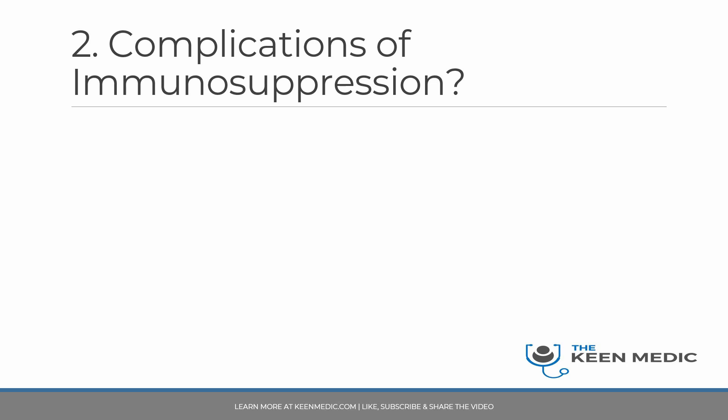Now let's look at complications of immunosuppression. Immunosuppression does wonders for patients — it allows transplants to happen and changes people's lives — but it comes with significant possible side effects, and every immunosuppressive medication has its own risk profile. Every common immunosuppressive medication carries a risk of sepsis: infections are simply more common in immunosuppressed patients. This includes patients on steroids.